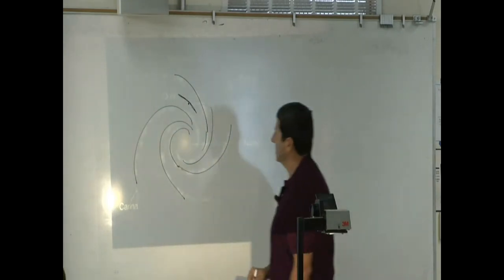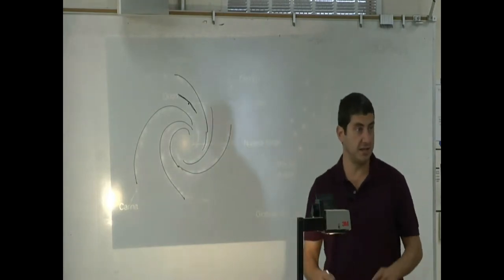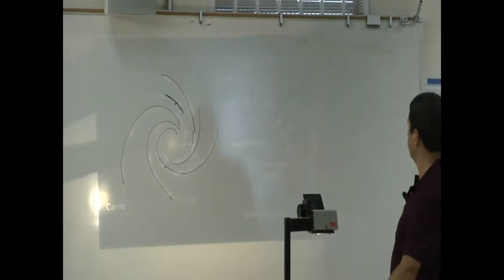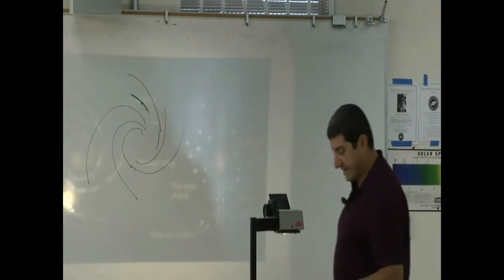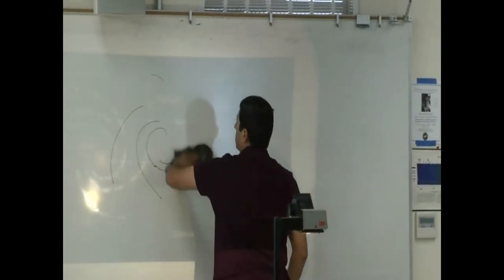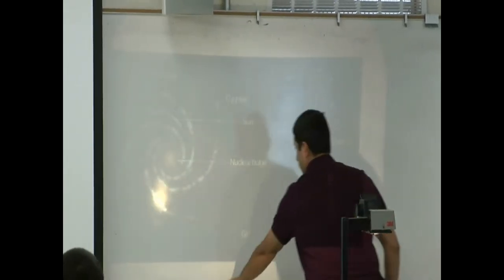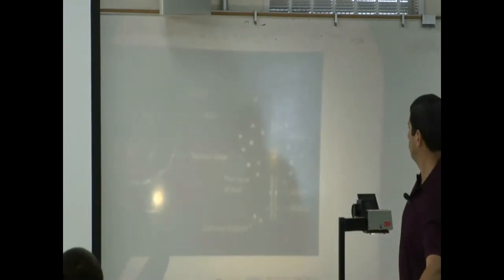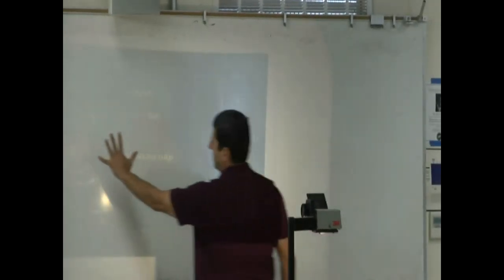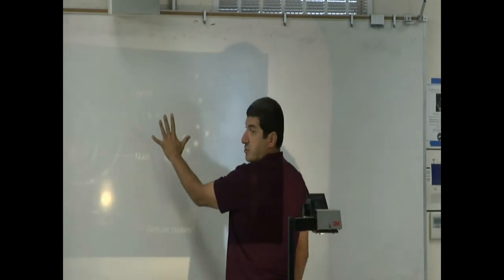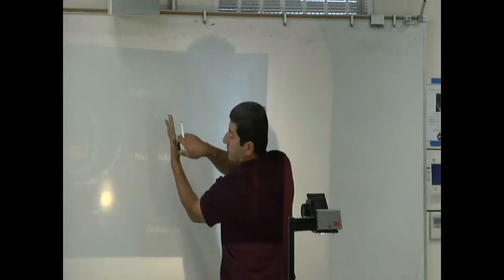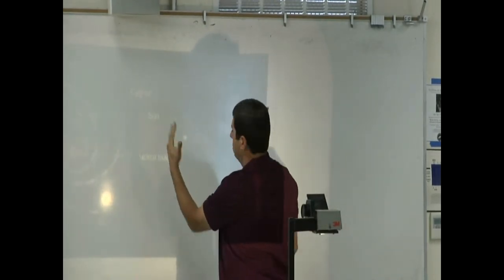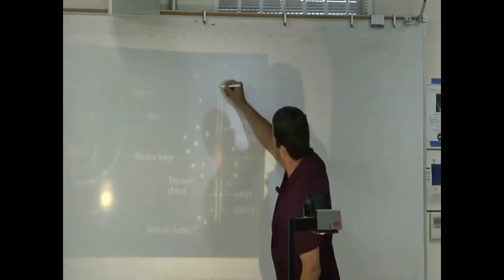So our galaxy is called a spiral galaxy. It has a spiral arm structure. Now, if you look at it from the side, that means you take this guy face value, and then you turn it and view it this way, from the side. You see that it's very thin.